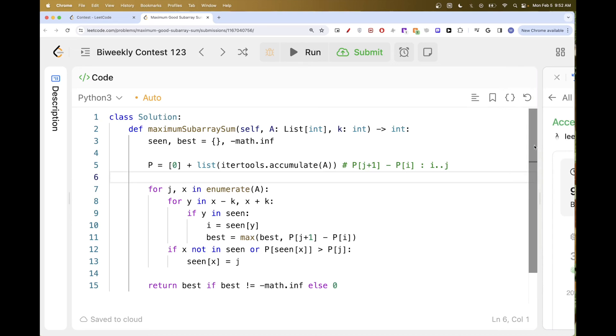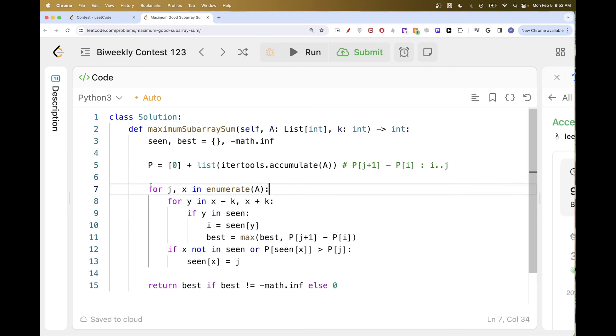Now in terms of time complexity, if you take a look here, this is just O(1) operation because we are doing it only two times. And this is O(n). So overall, time complexity is O(n). For space complexity, we are using prefix array here, so that's O(n) over there. And then the scene map is also O(n). So overall, O(n) time and O(n) space. So that's pretty much it for this problem. Thanks for watching and see you on the next one. Bye.